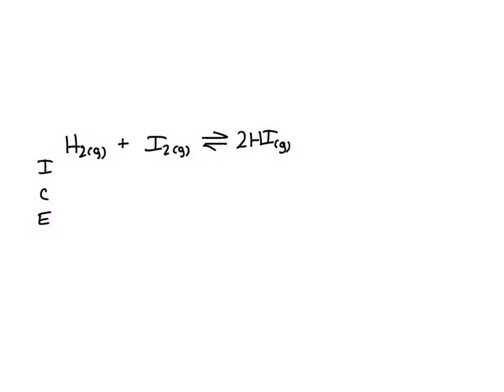Initial concentration of H2 and I2 in a 1 liter flask: 0.800 moles per liter. So H2 is 0.800, I2 is 0.800. For products, this is 0. Change is minus X, minus X, plus 2X. Equilibrium is 0.800 minus X, 0.800 minus X, and 2X.